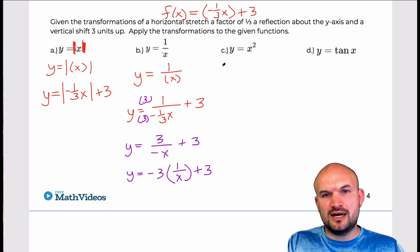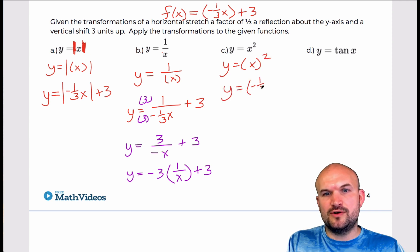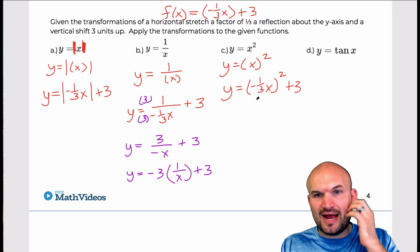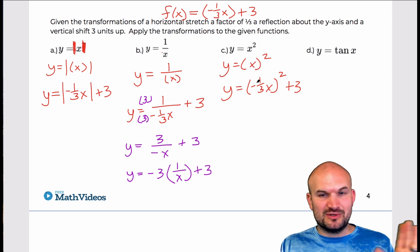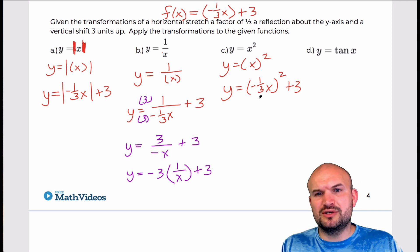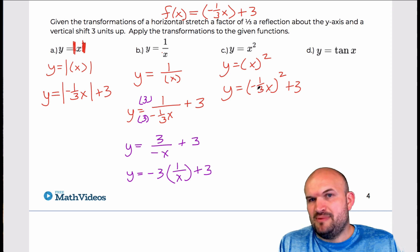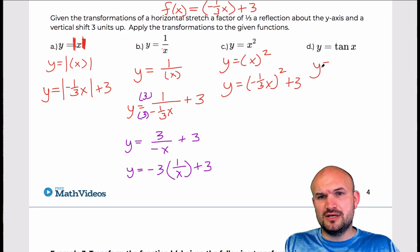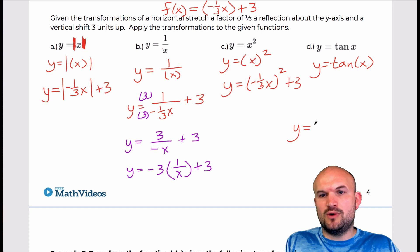For the quadratic, the inside is what's raised to the power — x squared. So we rewrite as y equals negative one-third x squared plus three. Note that a reflection about the y-axis doesn't really affect a quadratic's graph because anything squared is always positive, making the quadratic an even function. For tangent: y equals tangent of (negative one-third x) plus three.